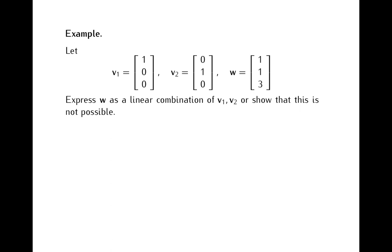Let's say we are given two vectors in R3: v1, which is the vector (1, 0, 0), and v2, which is the vector (0, 1, 0). We are also given a vector w with coordinates (1, 1, 3), and we want to check if this vector w can be expressed as a linear combination of v1 and v2.